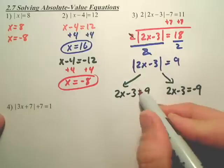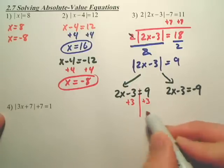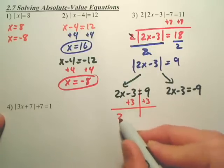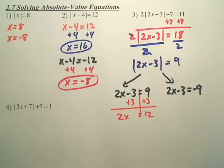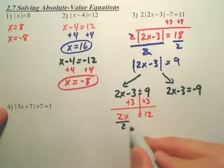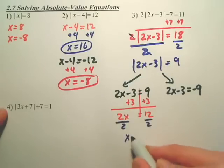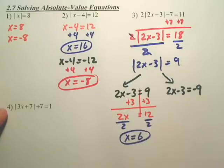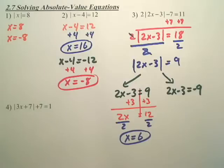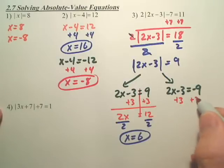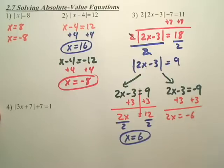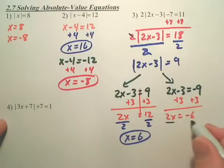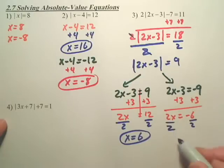So let's solve this. Add the 3 over. We now have 2x equals 12. And then we divide by 2. We got x equals 6. Over here, if we add the 3 over, we got 2x equals negative 6. Divide by 2. We got x equals negative 3.